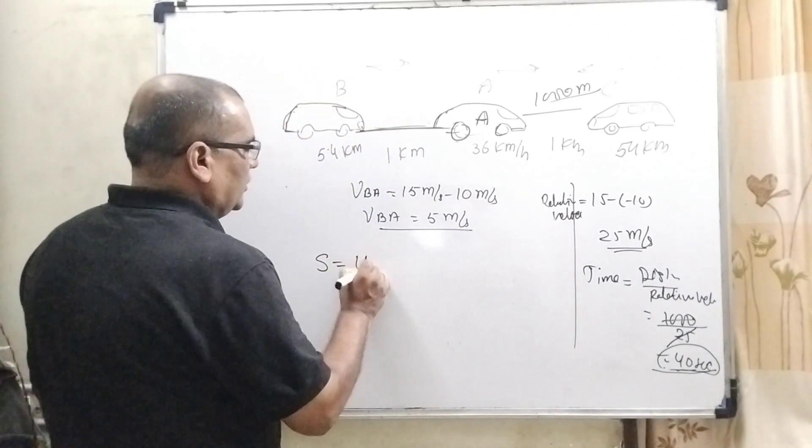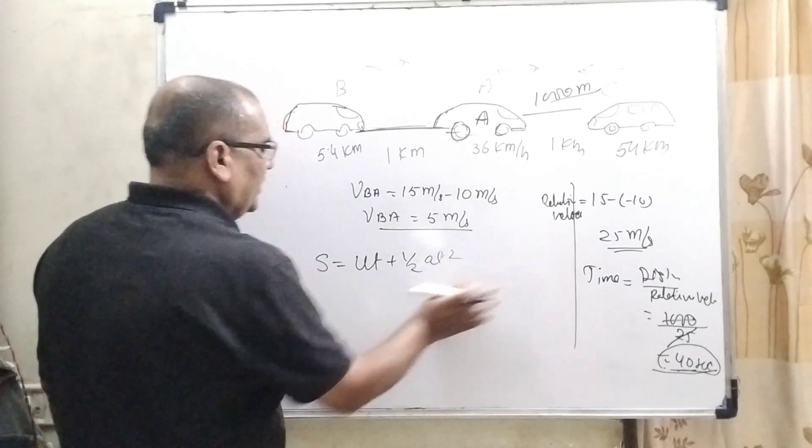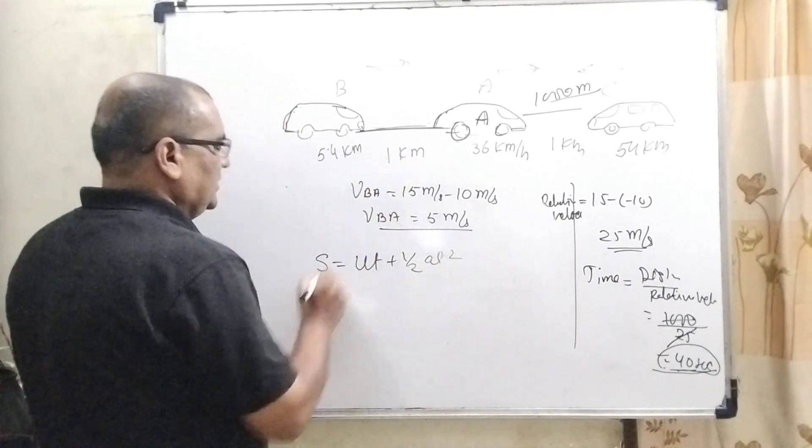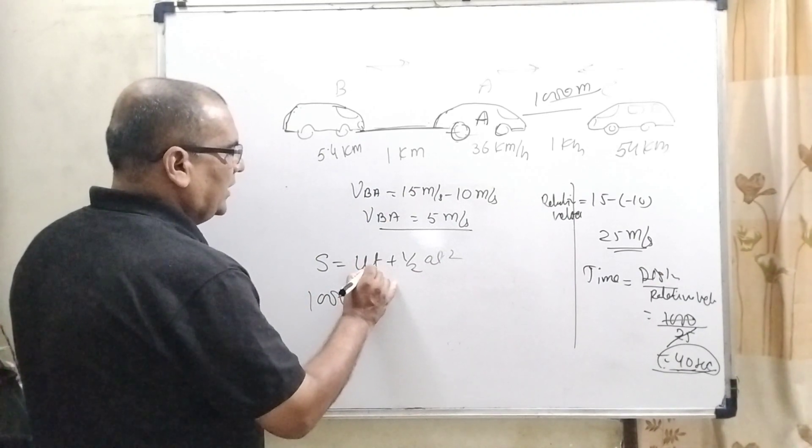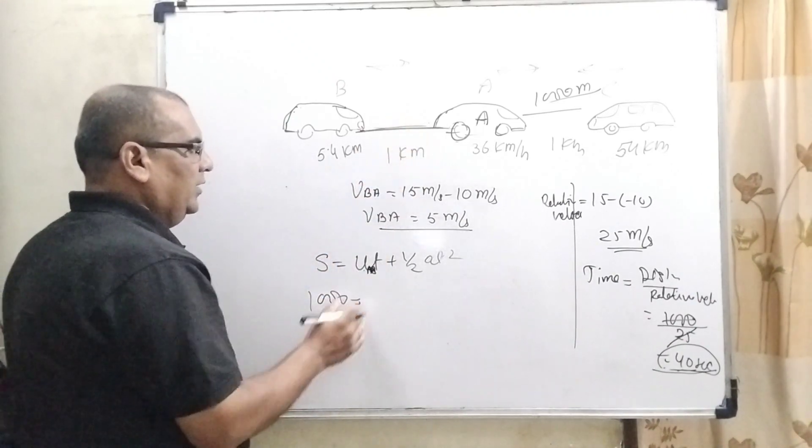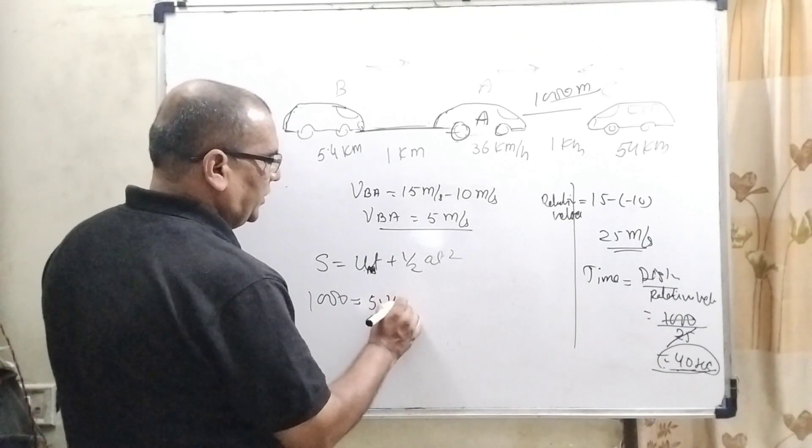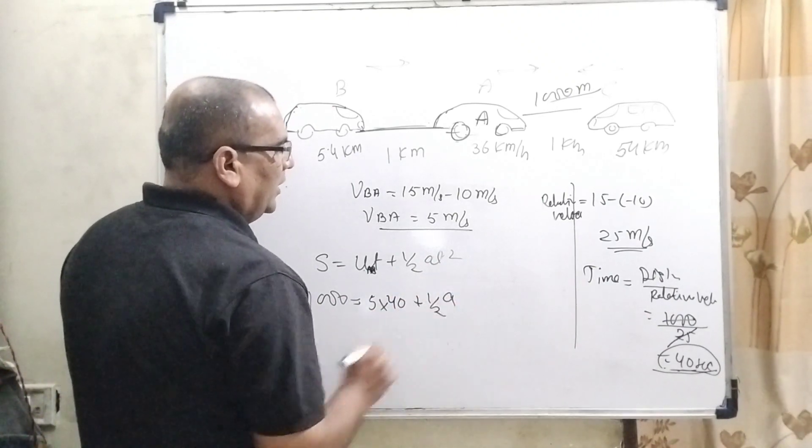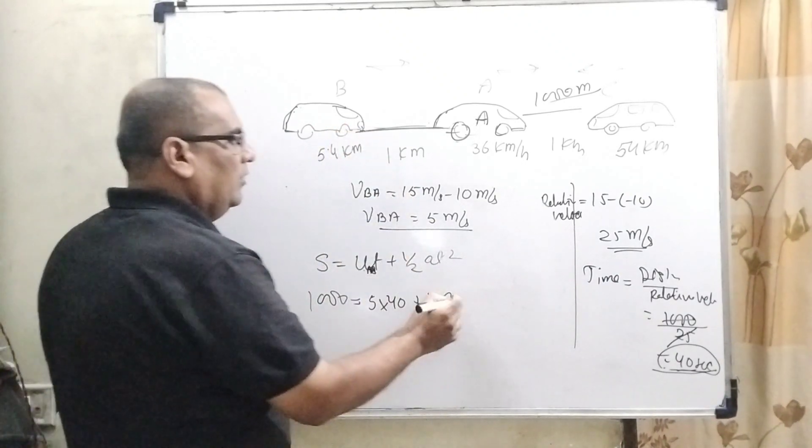So, here the distance between the two cars is 1000 meter, means 1 kilometer, and time we have already found out is 40 seconds. So, now formula S equals UT plus half AT square we are using here. So, what is S? That is 1000 meter. U here is B to A, relative velocity of B with respect to A, that is 5 meter per second and time is 40.